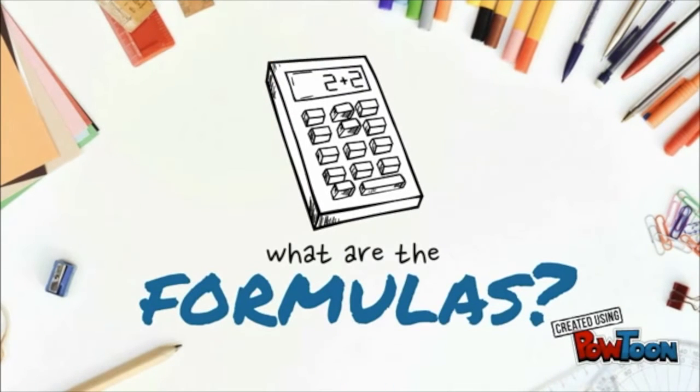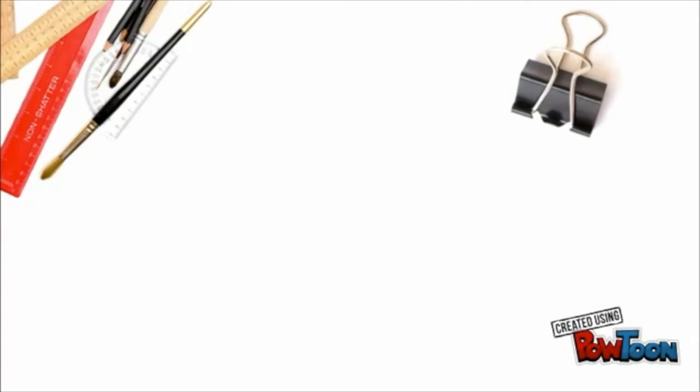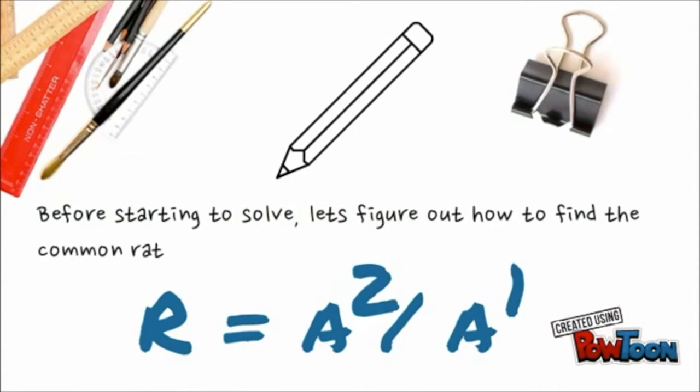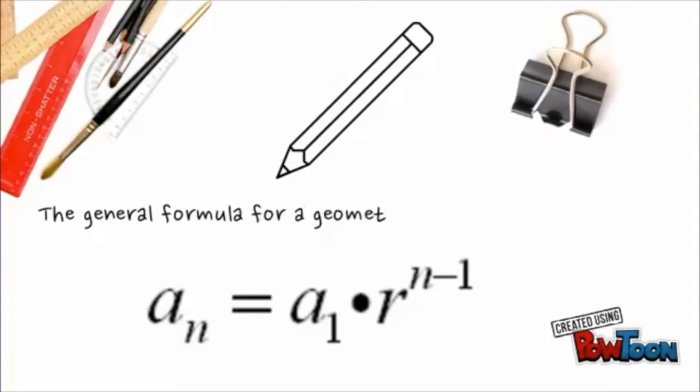So, what are the formulas used? The first one is used when finding a common ratio. The formula is r is equal to a sub 2 divided by a sub 1. The second one is used to write the general formula of a geometric sequence. The formula is a sub n is equal to a sub 1 times r raised to n minus 1.